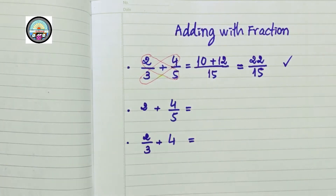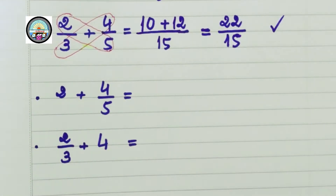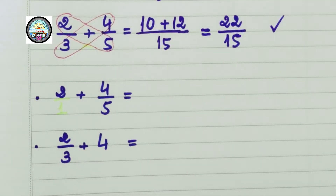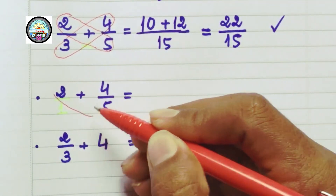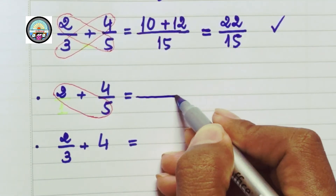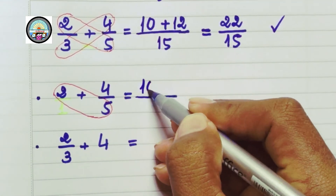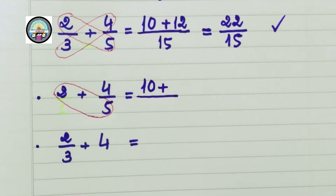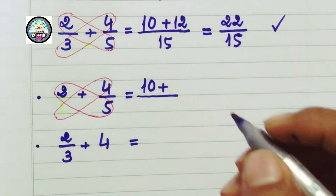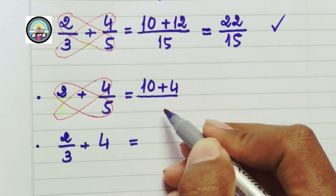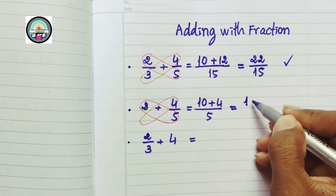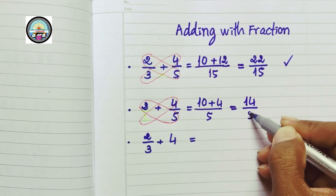We can select 2 over 1. Then, 10 plus 4 over 5. 10 plus 4 equals 14 over 5.